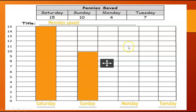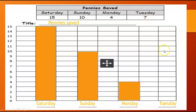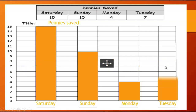Monday, how many were saved? Four. So bottom to what number? Four right here. Let's shade those in. And then Tuesday, how many were saved? Looks like seven. So from the bottom all the way to the seven line. I can just follow it along here. There's a seven. Let's shade it all in.